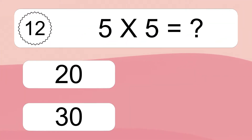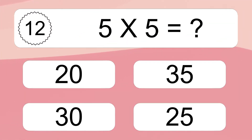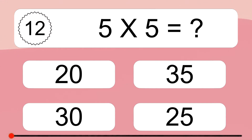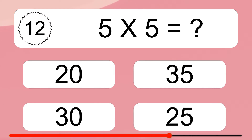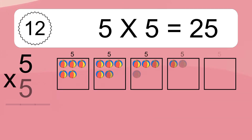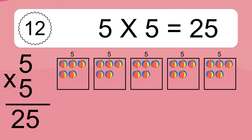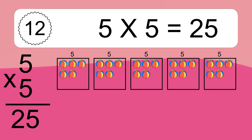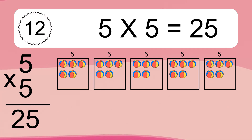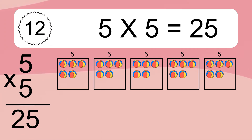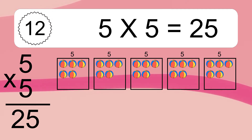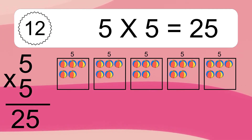5 times 5 equals what? 5 times 5 equals 25. We have 5 boxes, and each box has 5 colorful balls inside. If you count all the balls in all the boxes together, you will have 5 times 5 balls. This equals 25 balls.